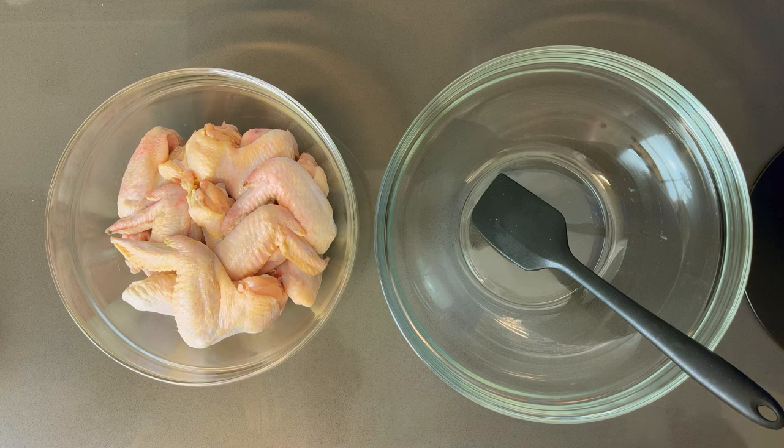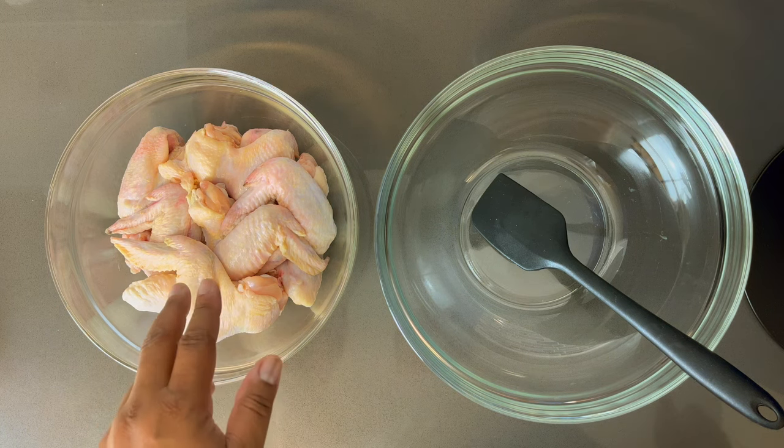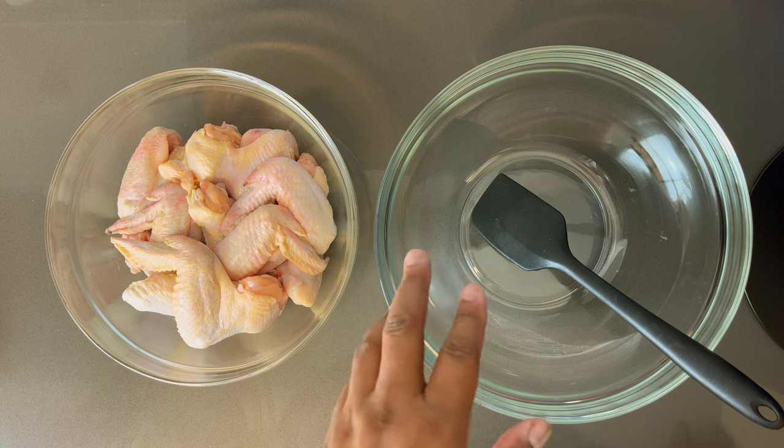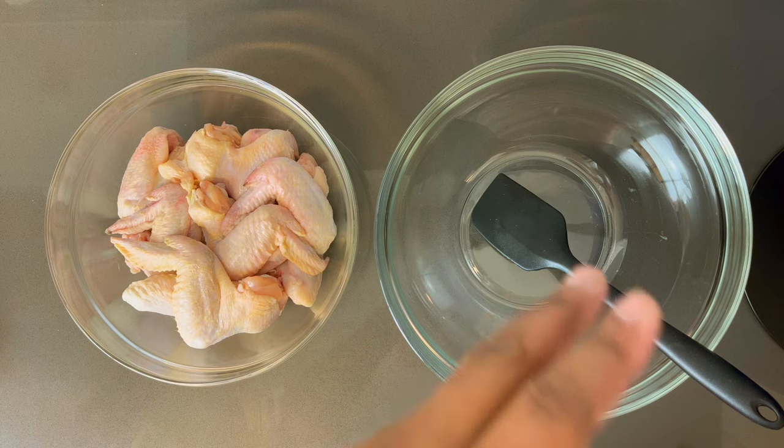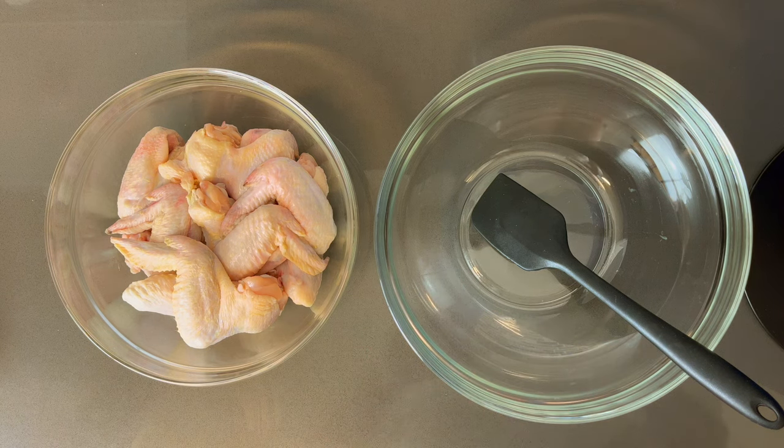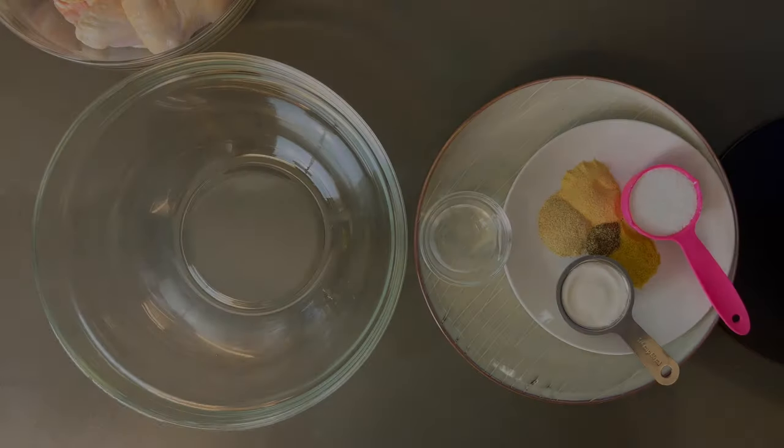Here's what we're starting with - I got some clean and patted dry chicken wings. In this bowl we're going to be creating the secret, which is the brine.